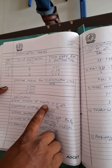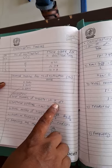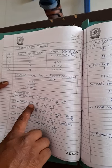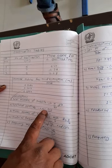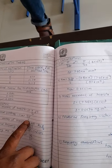First is polar moment of inertia for the disc, that is Ip = π/32 × d⁴, then torsional stiffness, that is K theoretical = GIp divided by capital L.